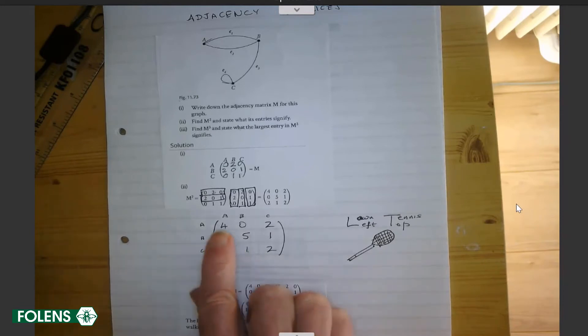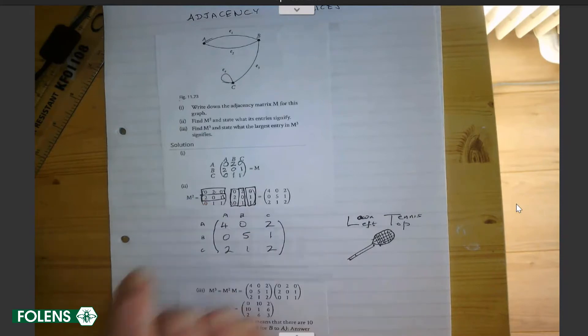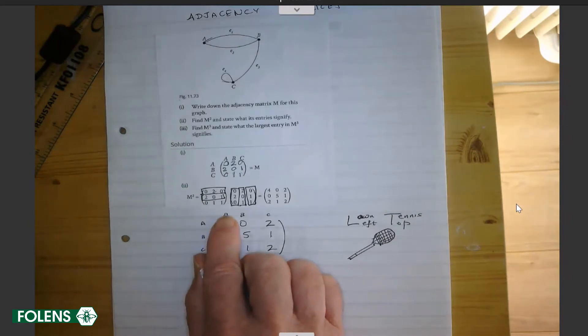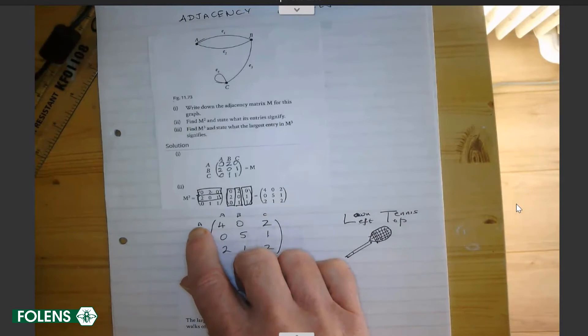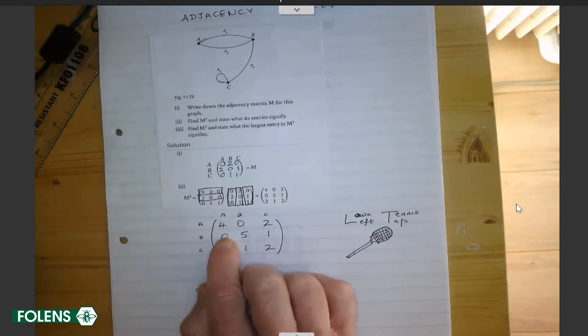Now, what does this signify? Well, this is M to the power of two, and this tells you the number of ways of getting from A to A in two steps, a walk of two steps. So there are four different walks of two steps because it's M to the power of two. How about from A to B? There are zero. How about from A to C? There are two walks of length two that go from A to C. Notice we go from left to top. What about B to A? There are no walks of length two. From B to B, there are five walks of length two that will bring you from B back to B, and so on.